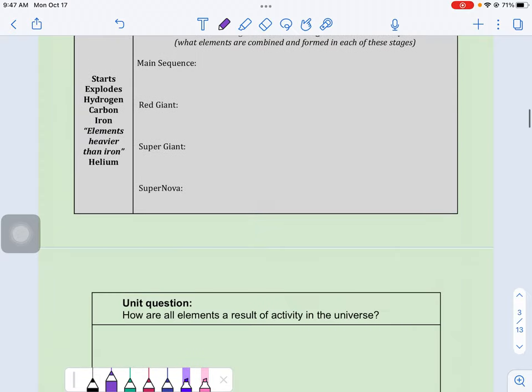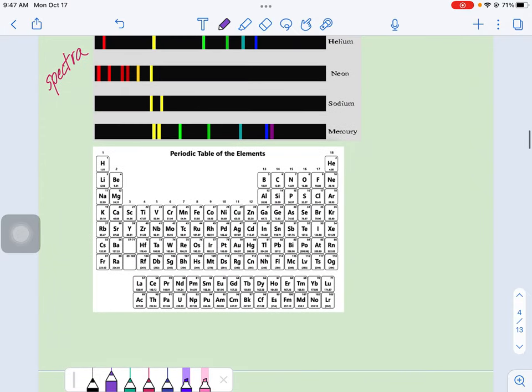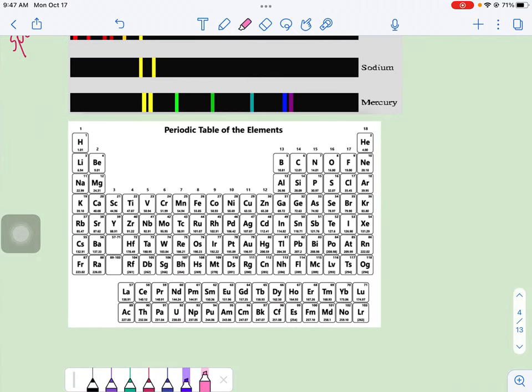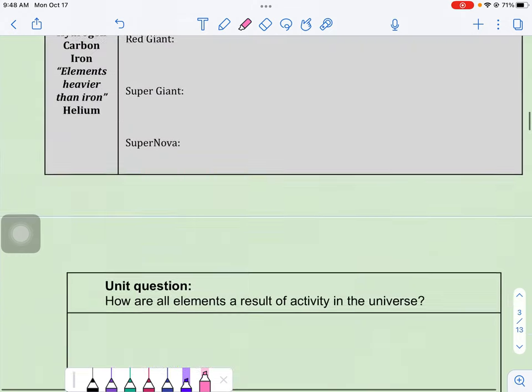So when we look at our periodic table, which we got one way down here, we can find those elements here. Hydrogen, helium, and lithium. Those are some of our initial elements. And the reason that there are beginning elements is because of how small they are. That's why they're up here at the tippy top on the periodic table is because of their size, or their mass, rather.